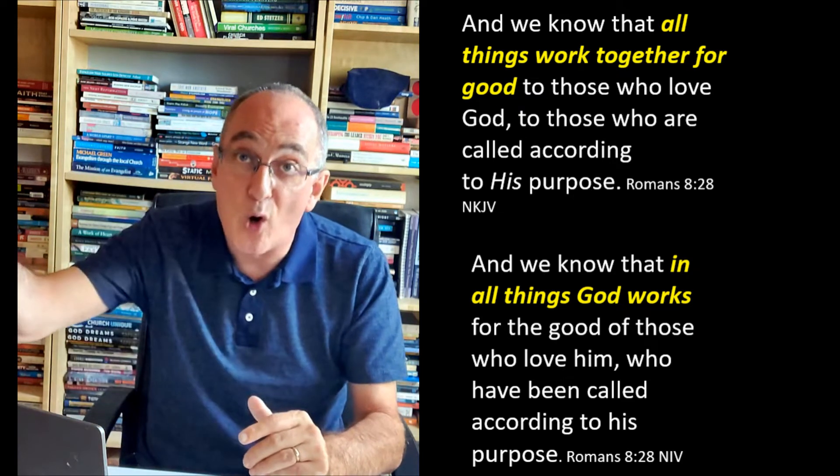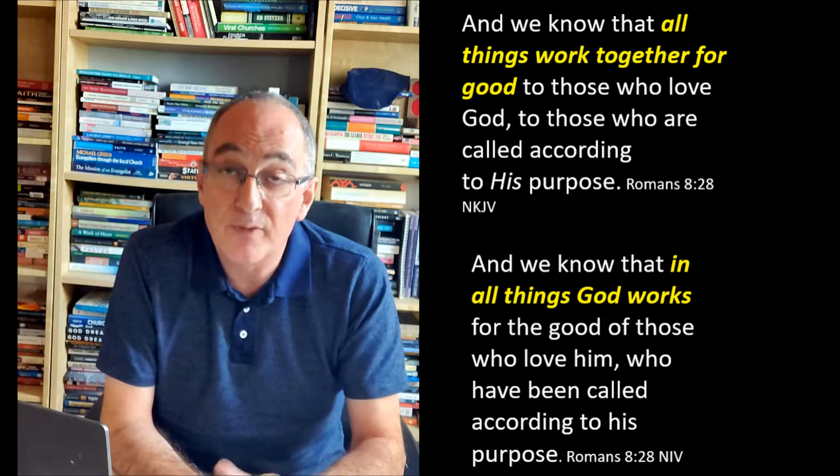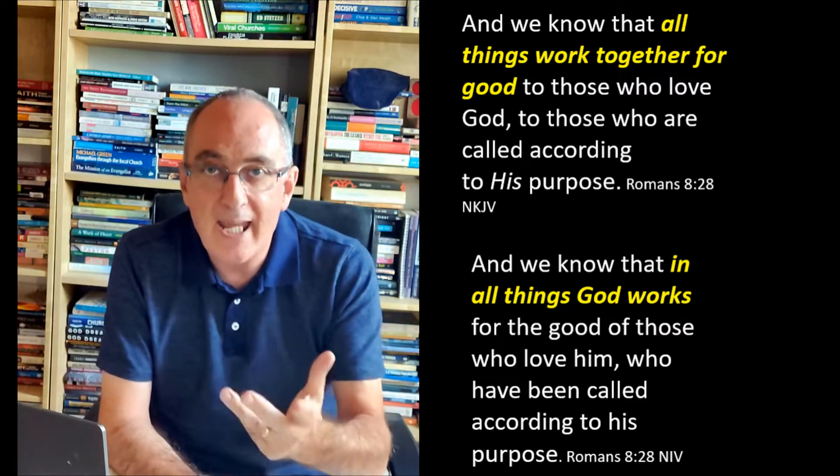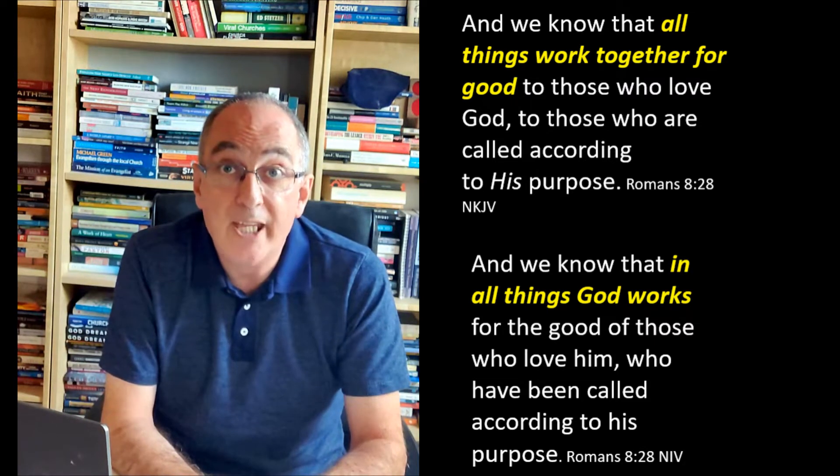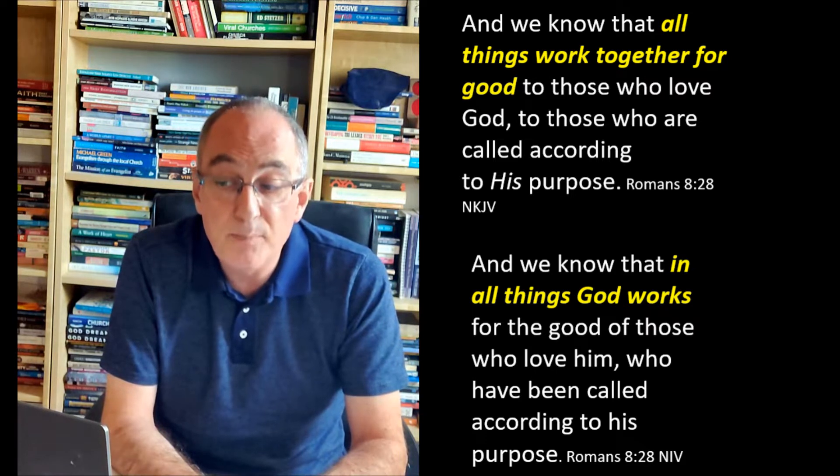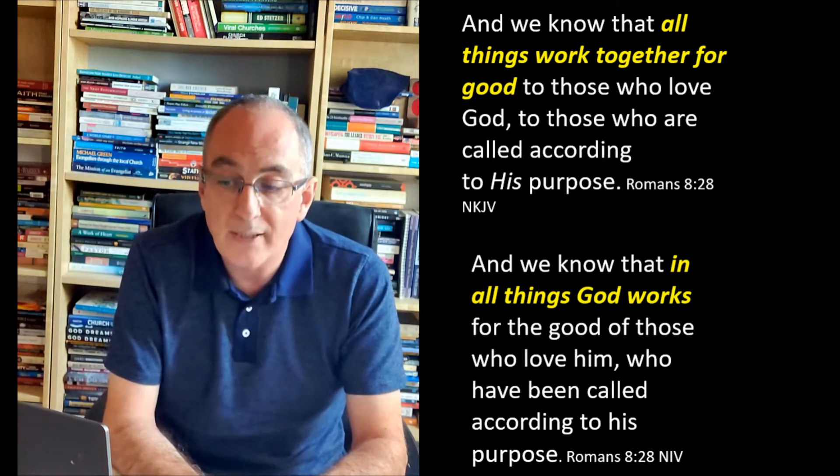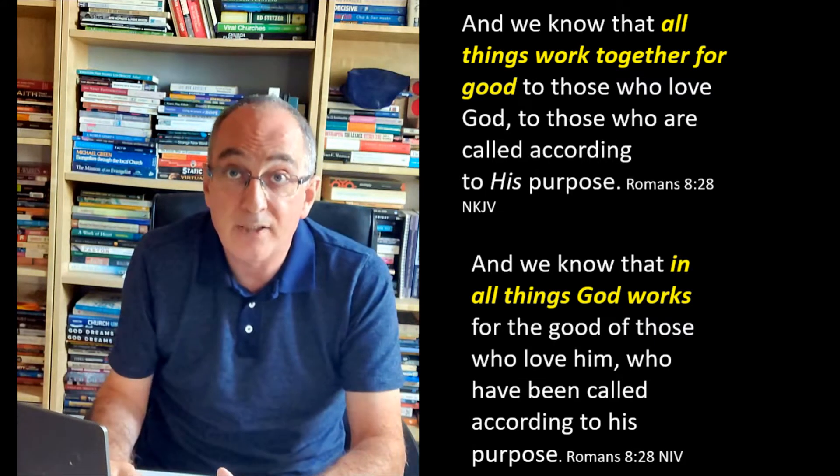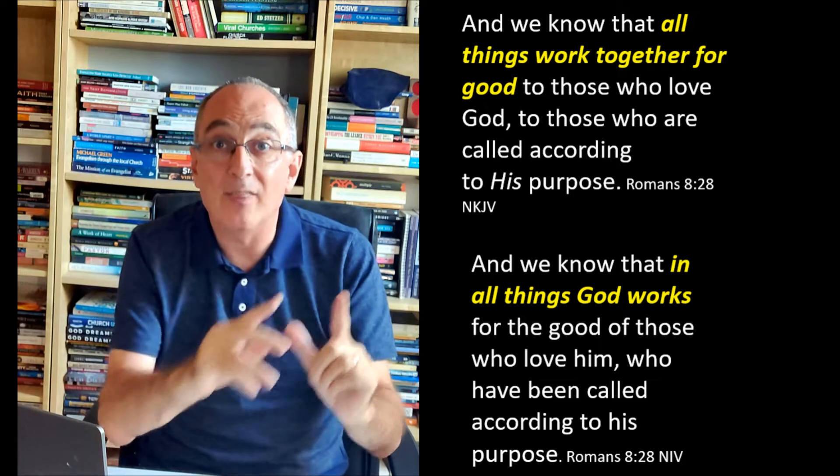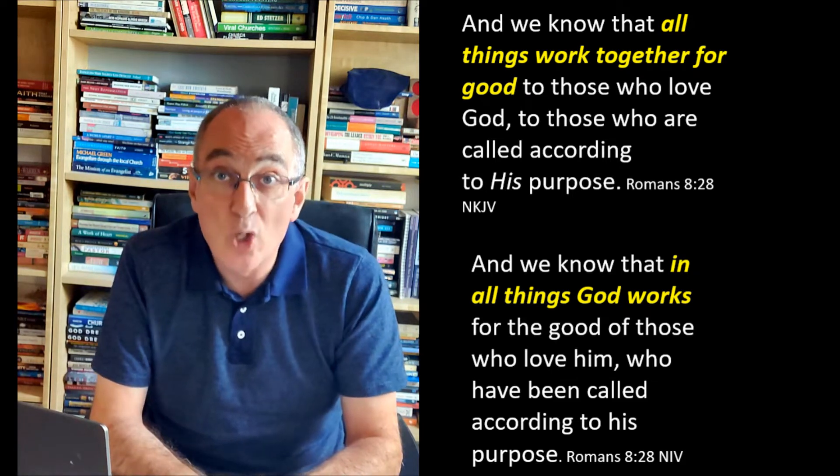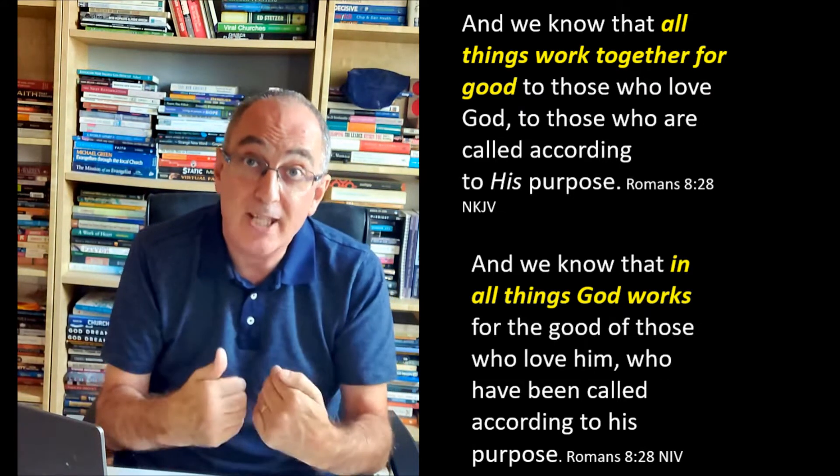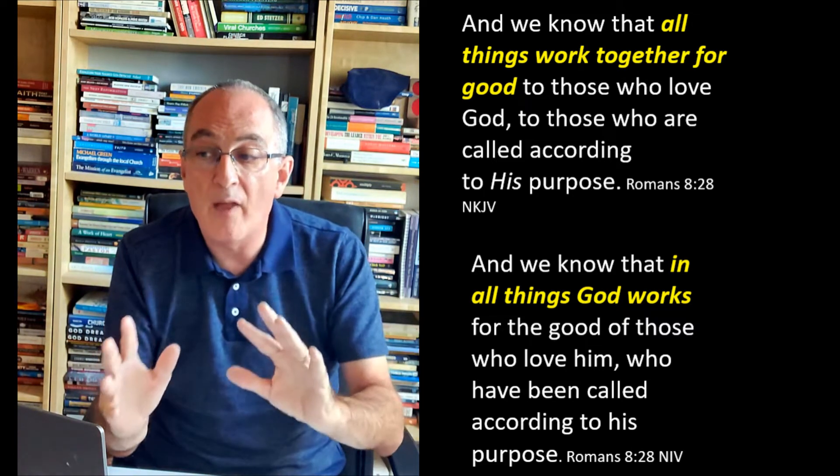And just to show you that I'm not way off in my thinking about this verse, John Stott, one of the most careful interpreters of the New Testament, said the familiar King James translation of all things work together for good is surely to be rejected since all things do not automatically work themselves into a pattern of good. So I think that the NIV translation of this verse is not only the better translation but it helps us to use this verse in a way that's helpful rather than hurtful.